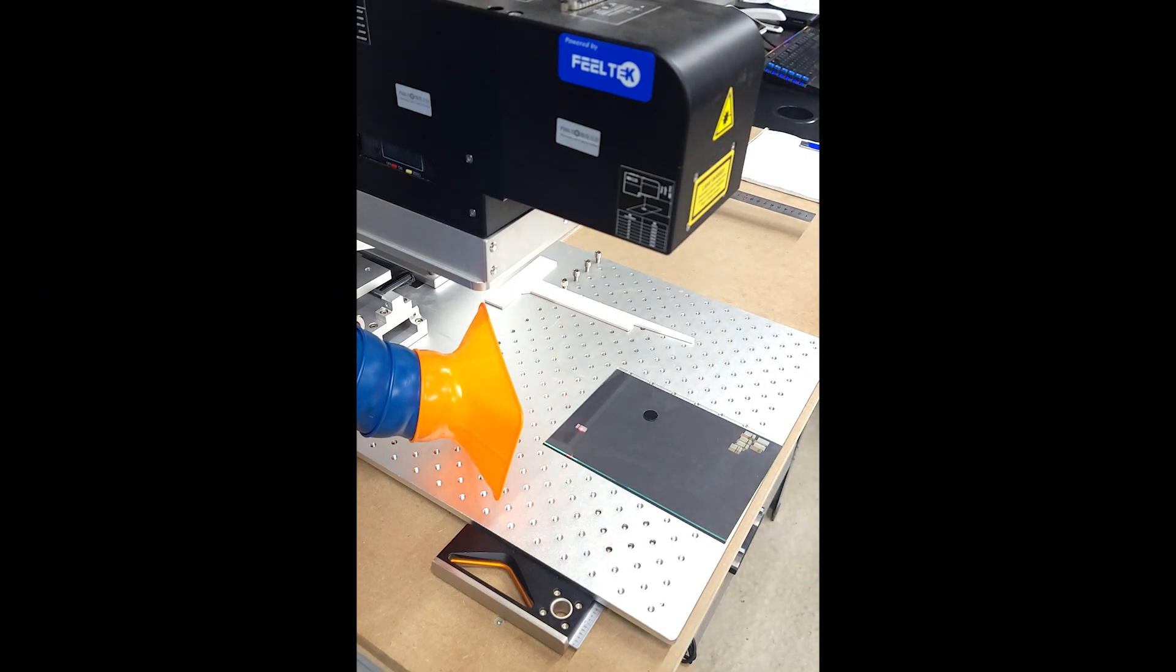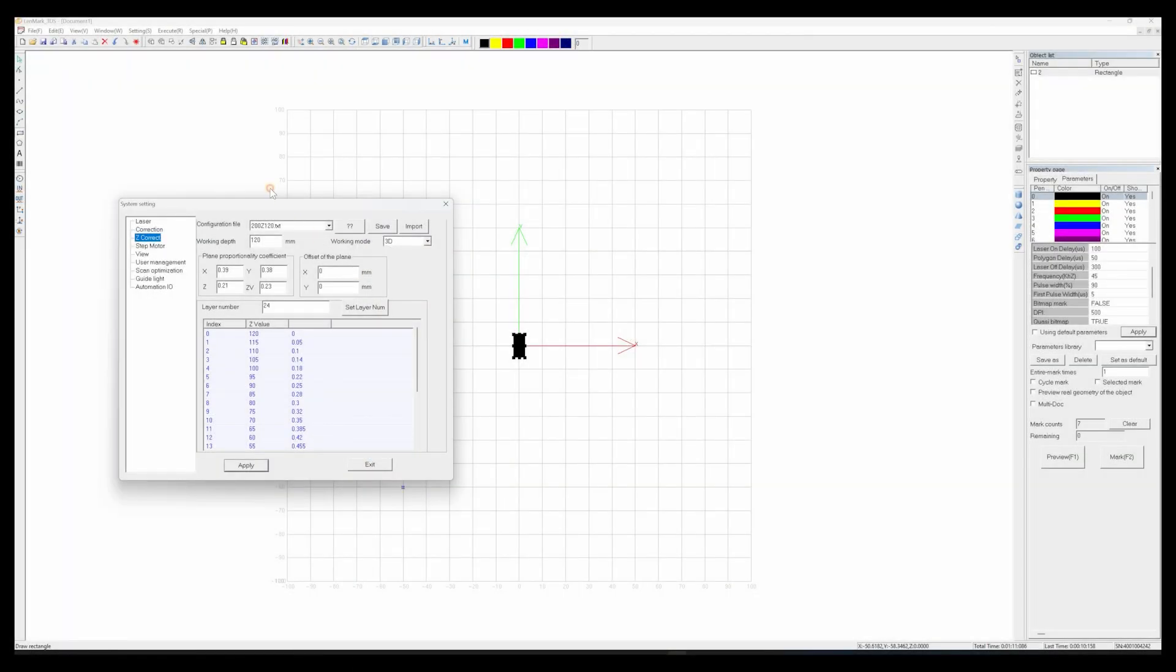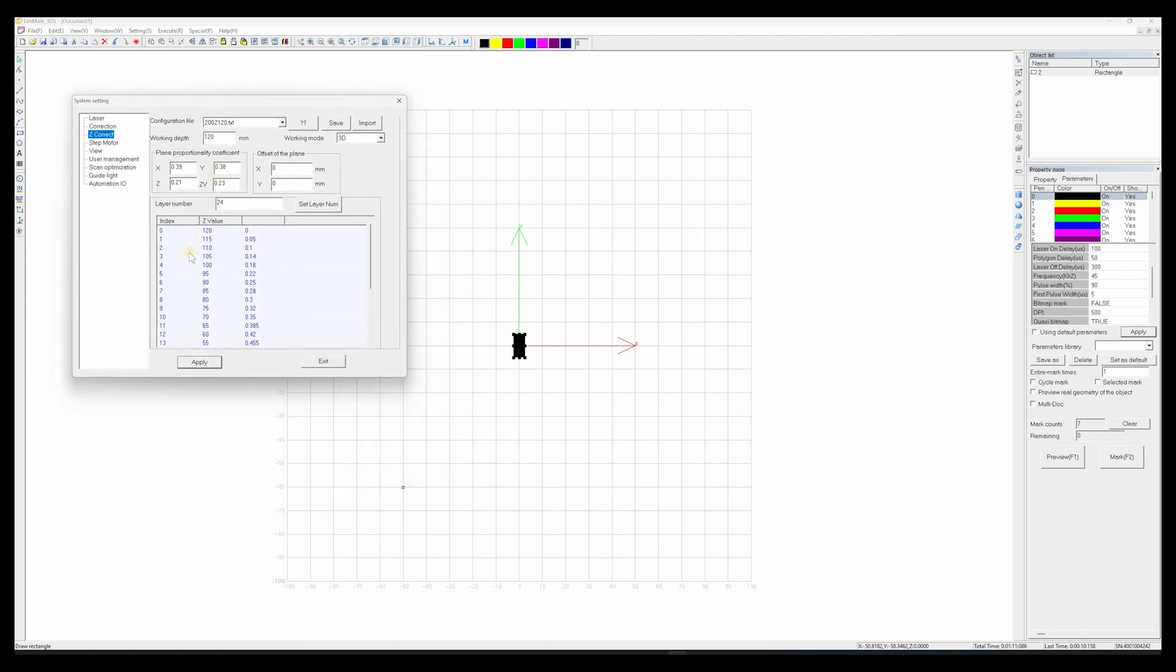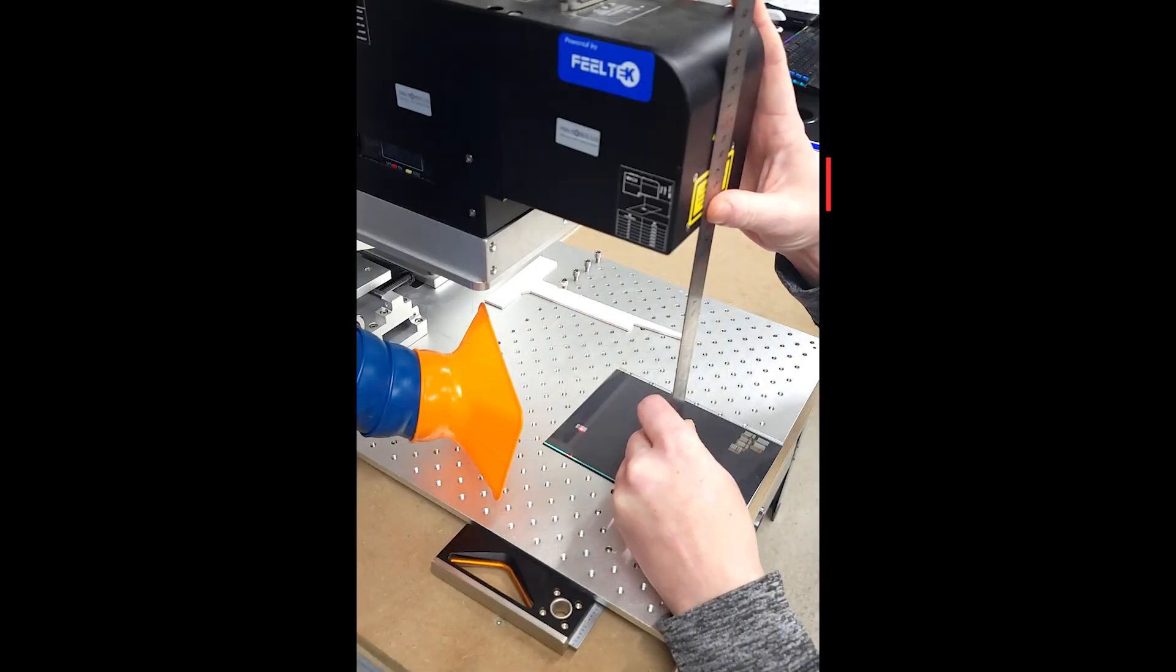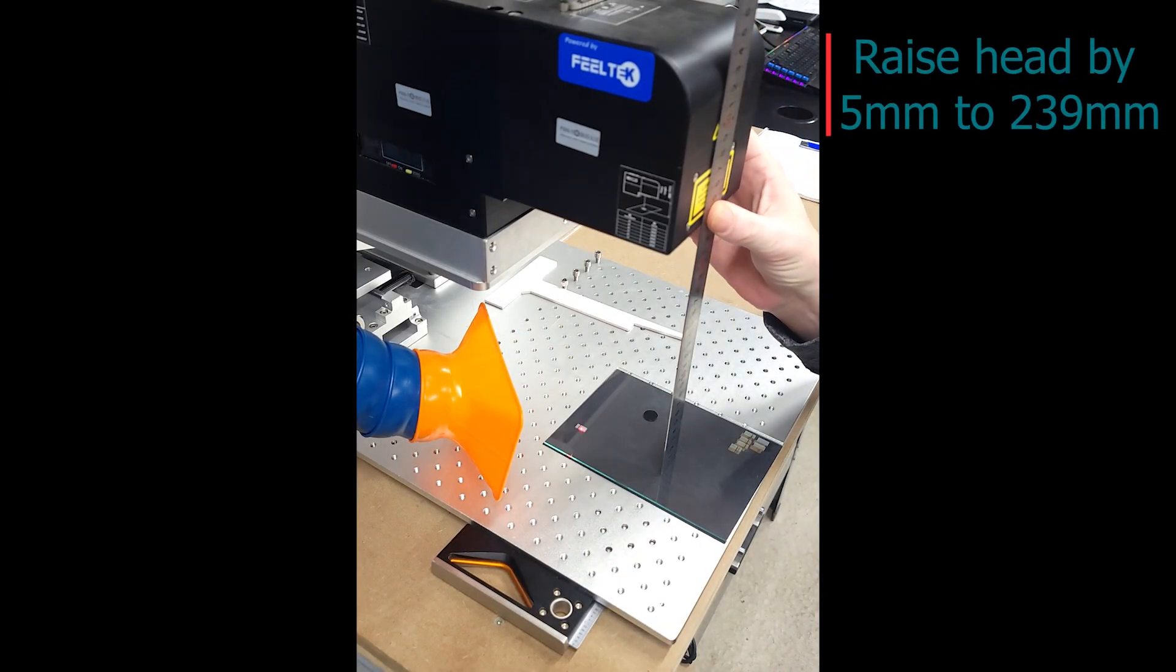We're heading back over to Lenmark. And now we're going to be working on a 115 Z value. And we're going to be adjusting this parameter here. To start, we need to move our rectangle down five millimeters to 115. We're going to apply that. We're going to head back over to the laser, and we're going to raise it by five millimeters. So we're heading up to 239.